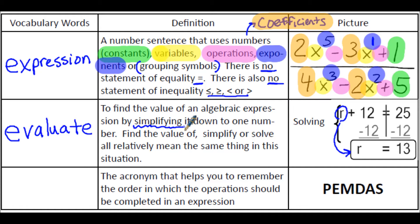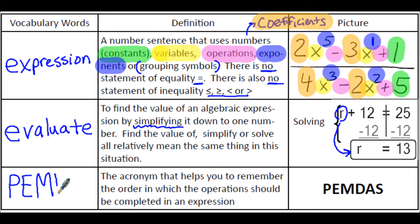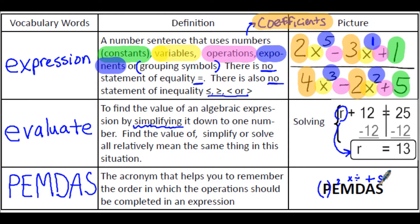For the algebraic expression, you're going to be simplifying it down to one number. You'll see simplify or evaluate often when you're working with expressions. The acronym that helps you remember the order in which the operations should be completed in an expression is called PEMDAS: P-E-M-D-A-S. P stands for parentheses, E is for exponents, M for multiplication, D for division, A for addition, and S for subtraction.